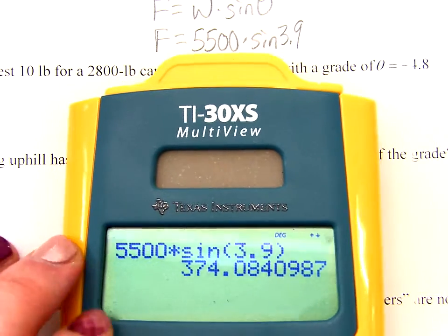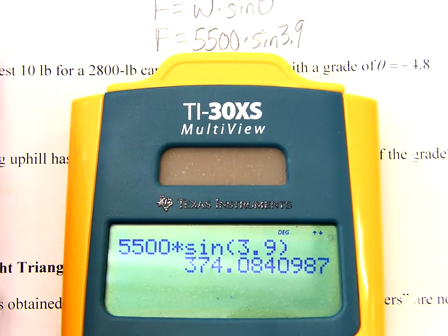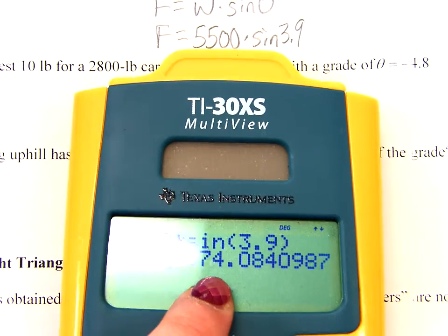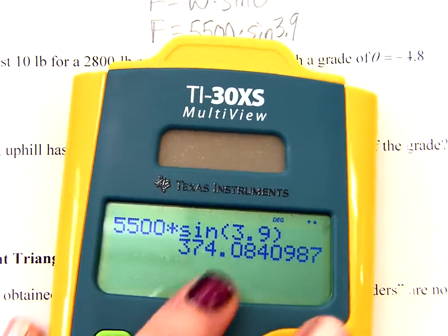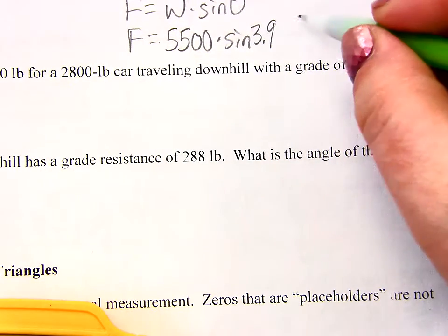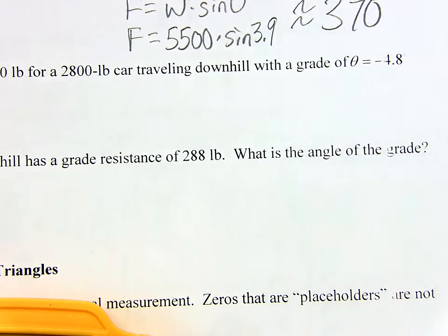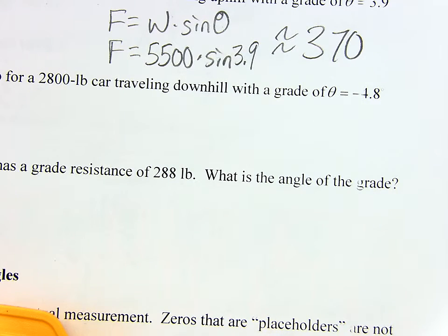Well, yeah, because now, remember, they asked us to calculate F to the nearest 10 pounds. So I want to round that off to the nearest 10 pounds, which would be 370.